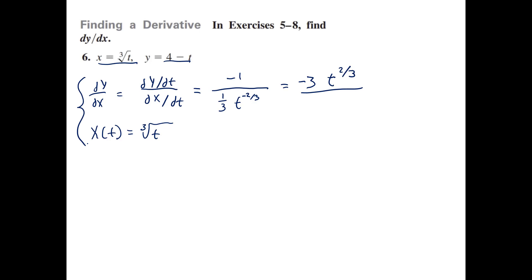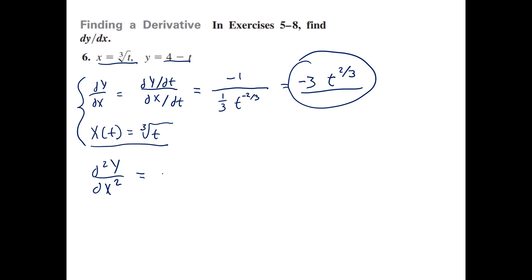This is especially important when you go to find the second derivative. For the second derivative, you might be tempted to just take the derivative of y prime, but because it is defined parametrically, we take the derivative of y prime and divide it by the derivative of x. So we take the derivative of y prime, which gives us negative two t to the negative one-third, and divide by dx/dt, which we already found: one-third t to the negative two-thirds.